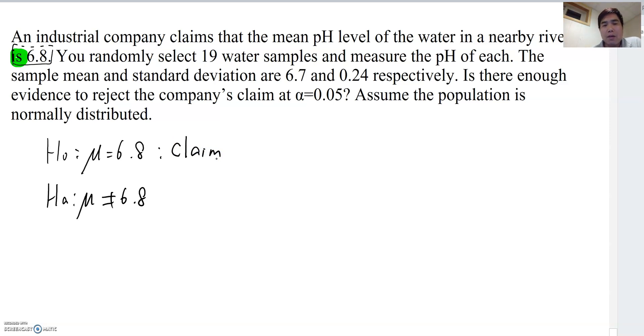Now I'm going to collect all the known information from these sentences. Randomly select 19 samples, so n becomes 19. Sample mean is 6.7 and standard deviation becomes s equal to 0.24. The reason I didn't assume s equal to sigma this time is because sample size is small, which means less than 30 data points. And then we're given alpha equal to 0.05.